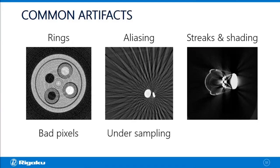Aliasing means that you didn't have enough number of projections. Again, this is easy to fix — you just need to collect more projections.